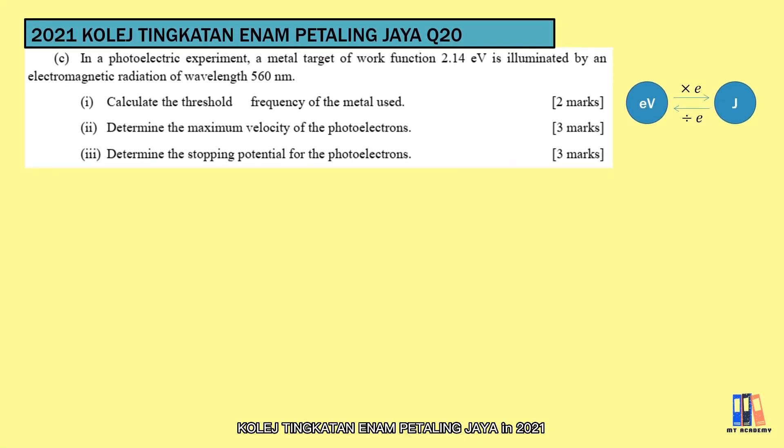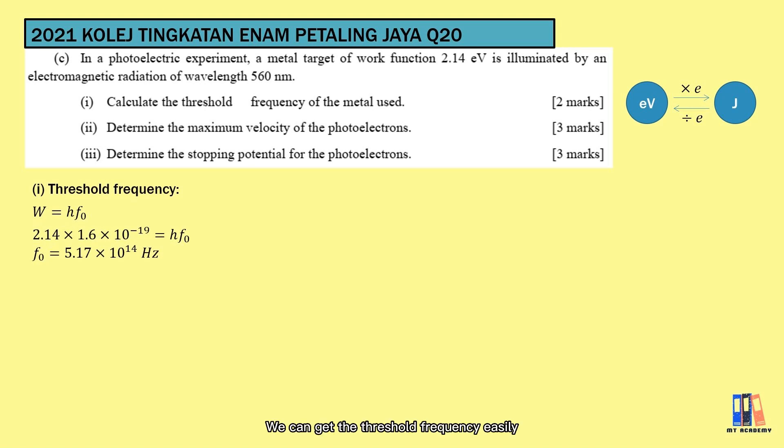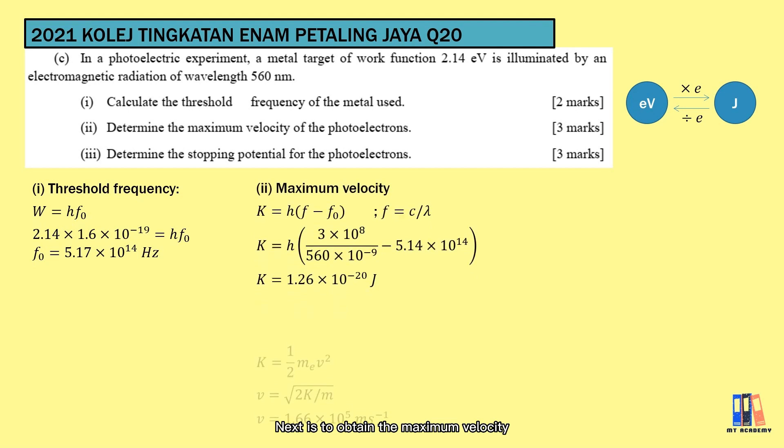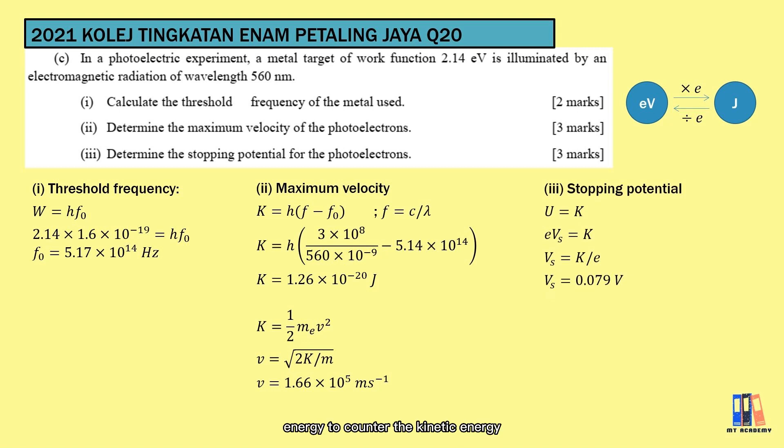We move on to a question from College Tunku Abdul Rahman in 2021. This is just a brief about the formula we have learned today. We are given with the work function of the metal and the wavelength. One thing special in this chapter is to learn about the conversion between the electron volt eV to joule. This is simply just multiplied or divided by the electron charge. We shall go through the question. This question is about the threshold frequency where W equals hf0. So we can get the threshold frequency easily when we have the work function. Next is to obtain the maximum velocity. There's a different way that you can also use the equation of E equal to W plus K. You can try to do it on your own. Last is the stopping potential. We have the electric potential energy to counter the kinetic energy. So we have eV is equal to the kinetic energy. Just take some time to do it on your own and I have provided the solution here for you.